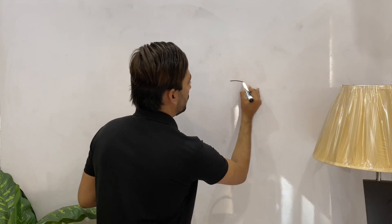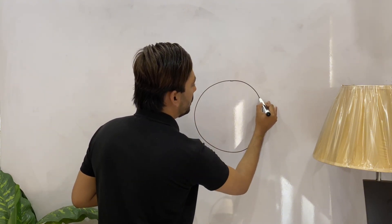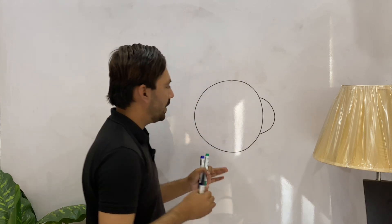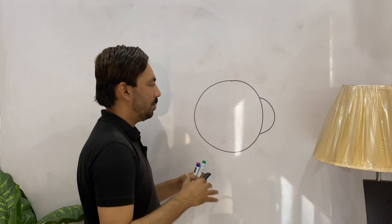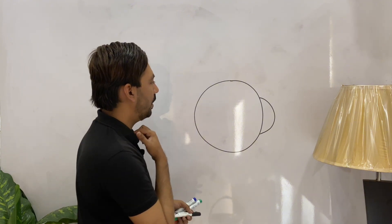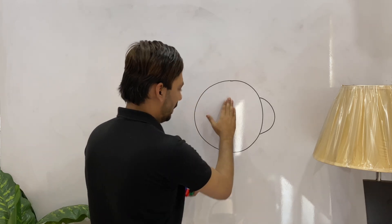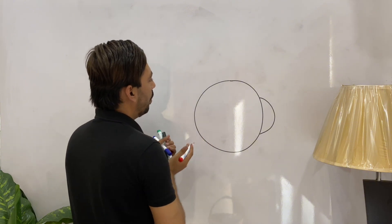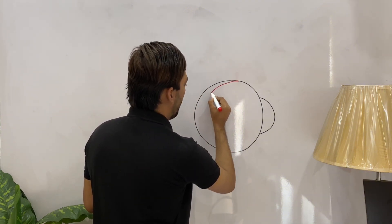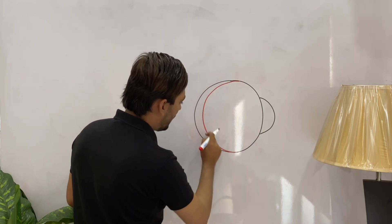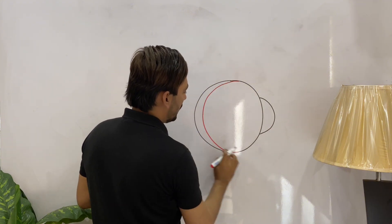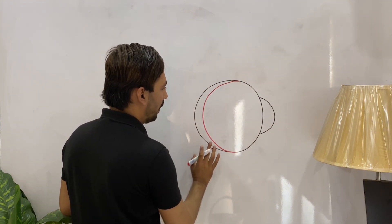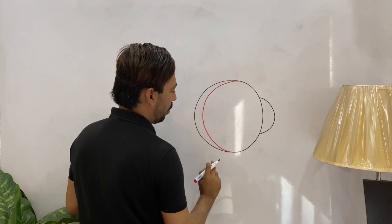Now we move to another reason — why myopes see bigger images and hyperopes see smaller images. I'm going to draw the eyeball. This is the normal eyeball. Now we are going to discuss axial ametropia. In hypermetropia the eyeball is smaller than normal. This red line indicates the smaller hyperopic eyeball, while the black marker shows the normal emetropic eye.